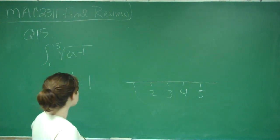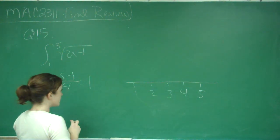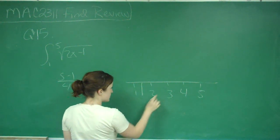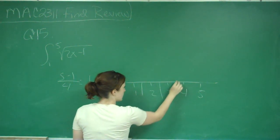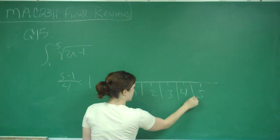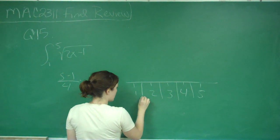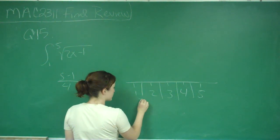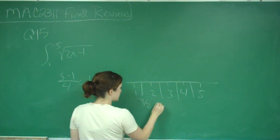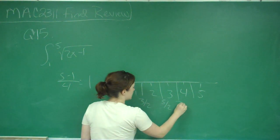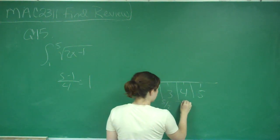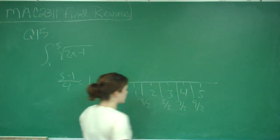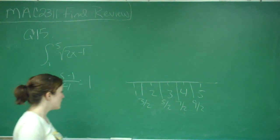And then I'm using the midpoint, so I'm actually going to be using the values in between all of my rectangles. And so that's going to be 1 and 1 half, which is 3 halves, 5 halves, 7 halves, and then 9 halves. So those are all my values.